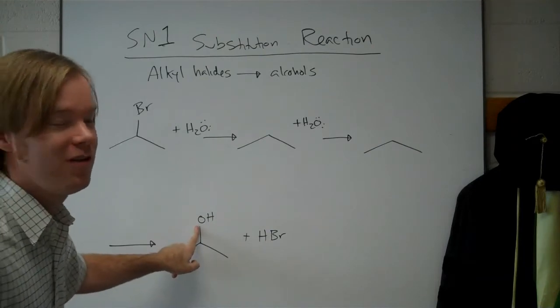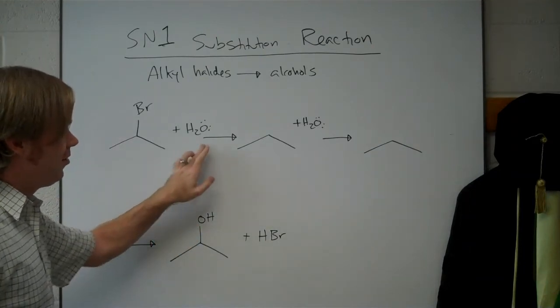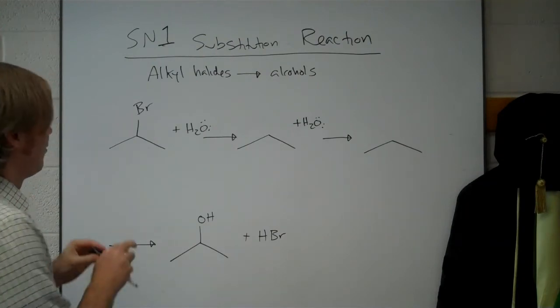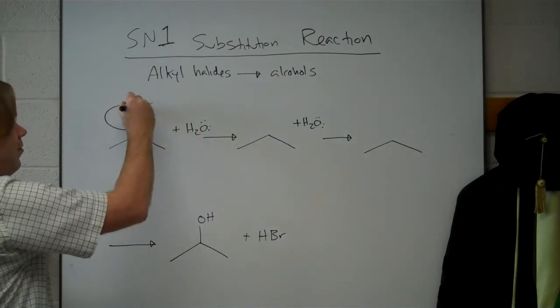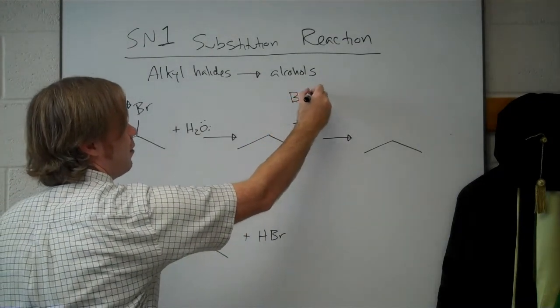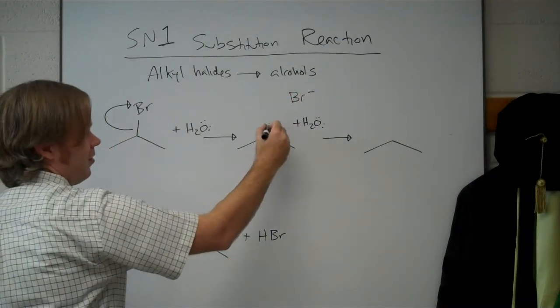So the very first step, rather than nucleophiles and electrophiles, is the leaving group coming off. So bromine comes off, keeps the electrons, so you get Br-, carbon lost them, so you get a plus charge.